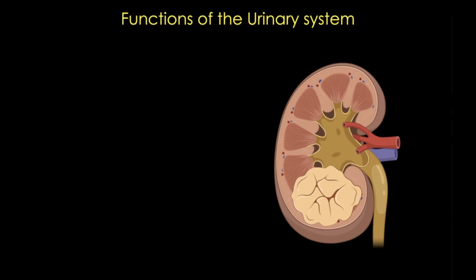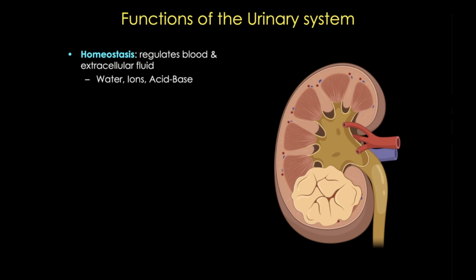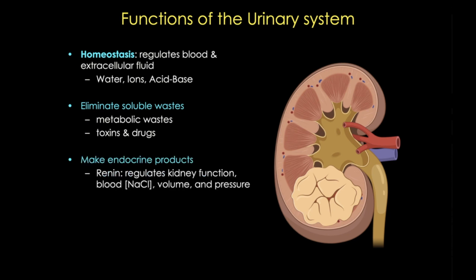The urinary system has three basic functions: homeostasis, or the regulation of blood and extracellular fluid; elimination of soluble wastes; and it is also an important endocrine organ. It produces renin, erythropoietin, and vitamin D.